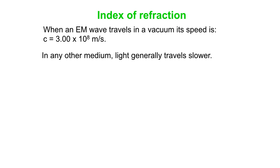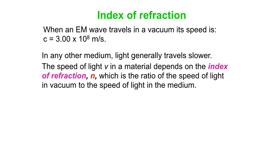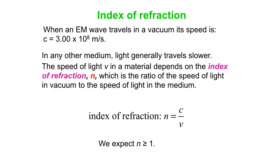In any other medium, light generally travels slower than that. So the speed of light V in a material depends on the index of refraction. Our symbol for index of refraction is N, and that's the ratio of the speed of light in a vacuum to the speed of light in the medium. N has no units — it's speed over speed, C over V. So typically we expect N to be greater than or equal to 1, because the speed of light in a medium other than vacuum is a little bit less, or even a lot less, than the speed of light in vacuum.